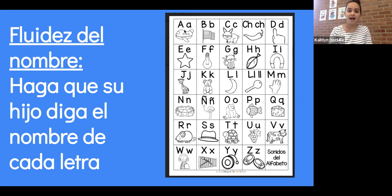Por ejemplo, A, B, C, D. La CH es un dígrafo y pueden decir CH.